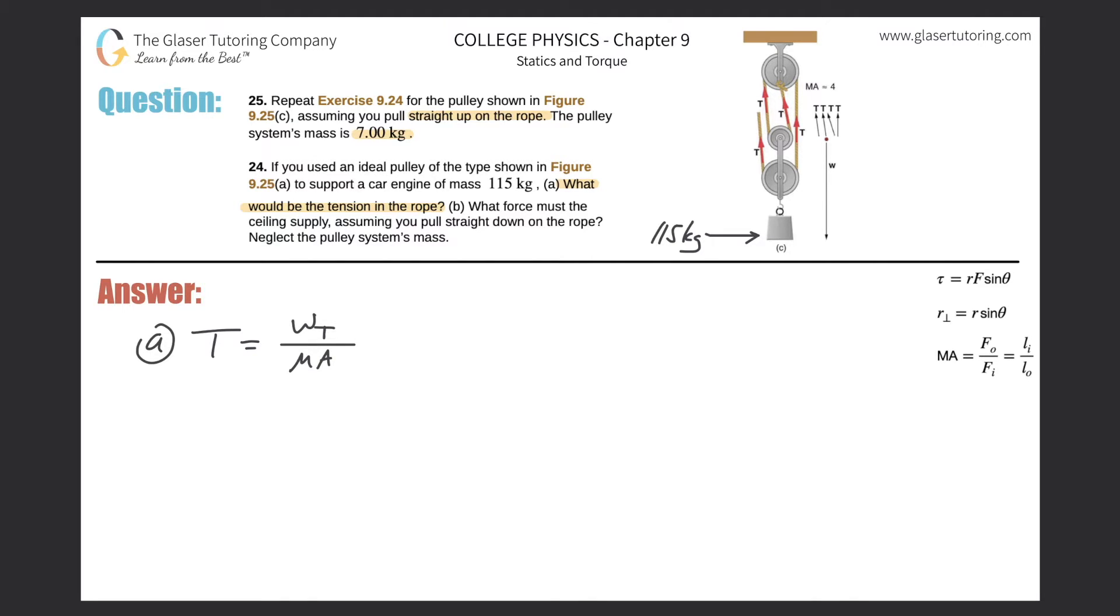So in the problem prior, we just had one mass, so it was just mg. But in this problem, we have two masses. We have the mass of the object here, and we have the mass of the whole pulley system. So this would be the mass of the car engine times gravity plus the mass of the pulley system times gravity, all divided by the mechanical advantage. Remember, the mechanical advantage is equal to the number of arrows pointing upward or opposing the weight.